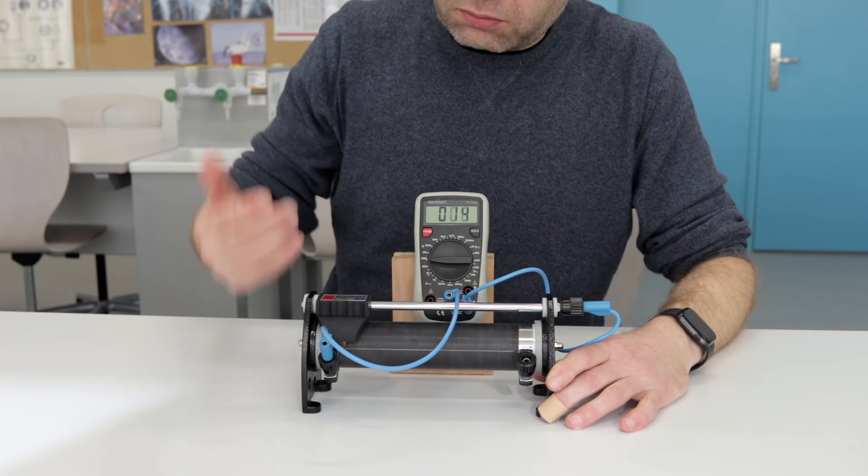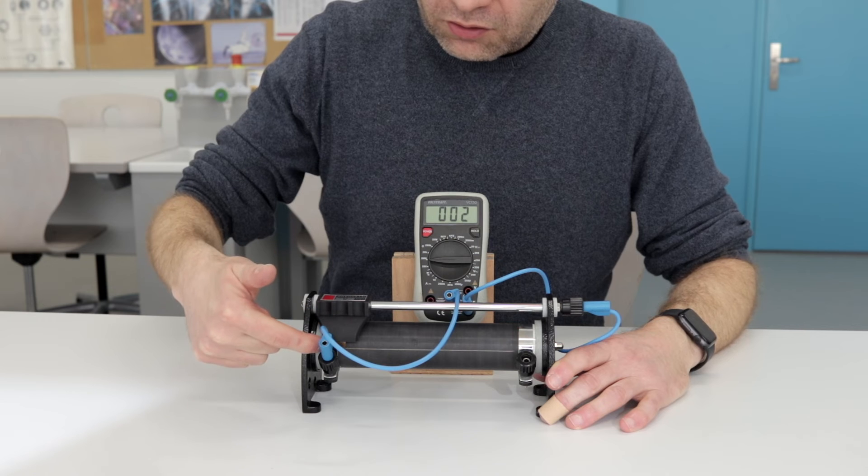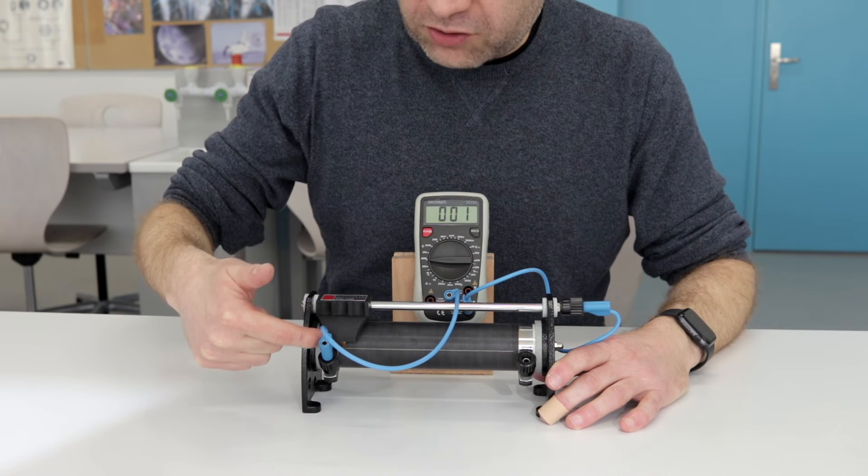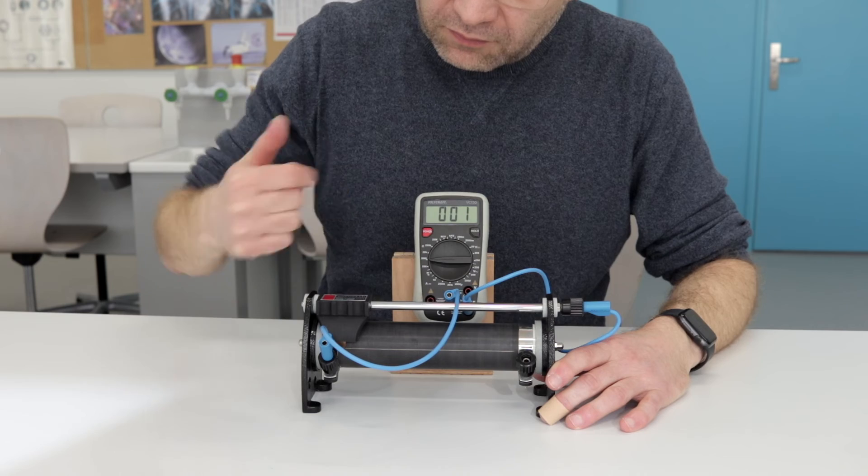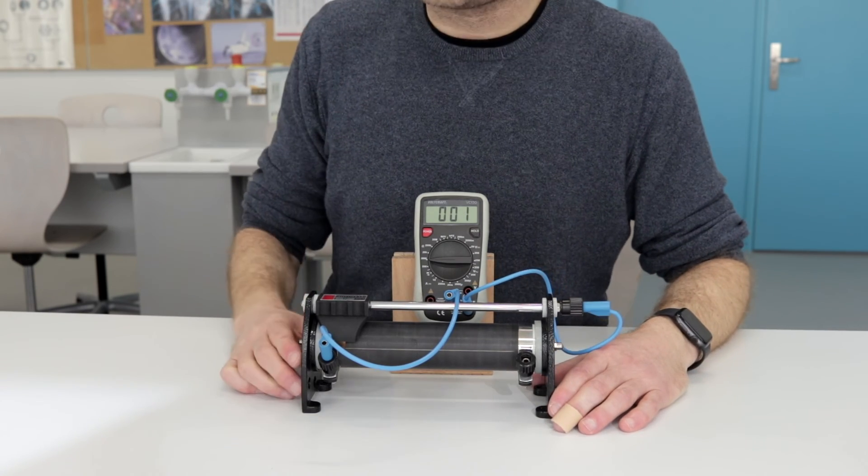So right now, the wiper is all the way to this end. The resistance that I'm measuring is the section of the circuit from the very end, which is very close to zero. It only shows one ohm resistance.